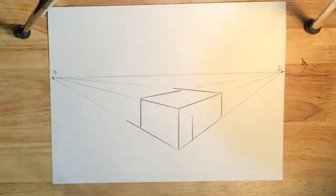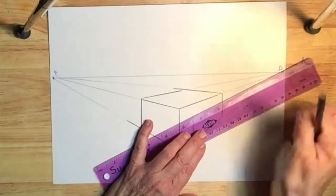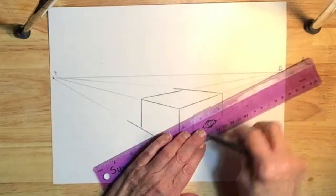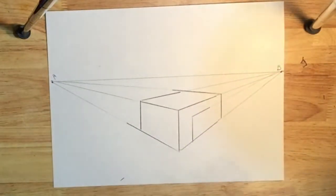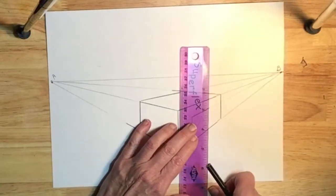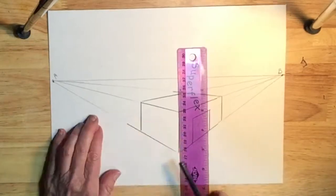of course you start with a vertical line, like we did before, and this is on the B side, so I line up the top of the line with the B vanishing point. Then I finish off the other side by adding a line parallel to the first line.